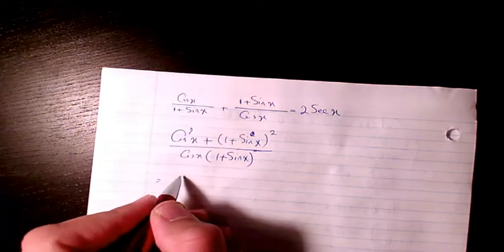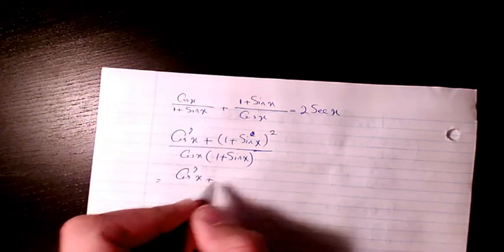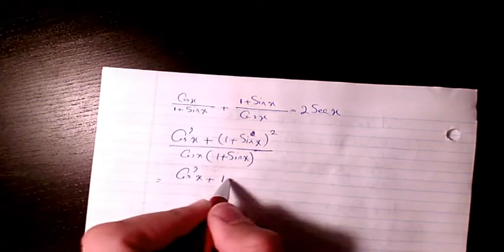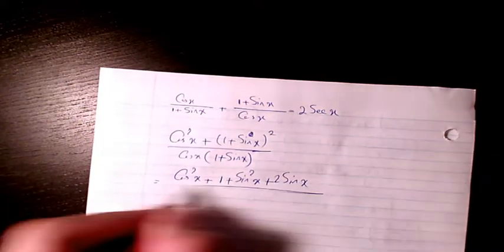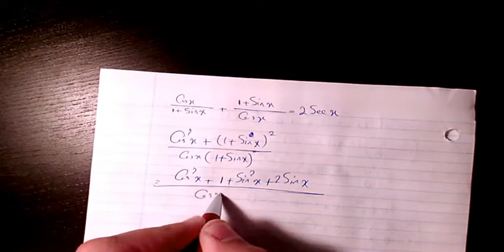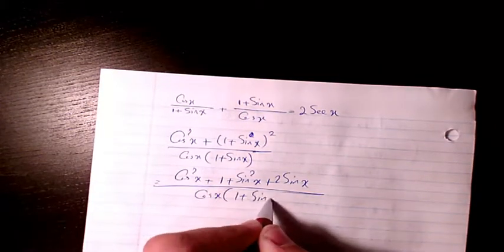So next step I will basically expand. This one is going to be 1 plus sine squared x plus 2 sine x divided by cosine x times 1 plus sine x.